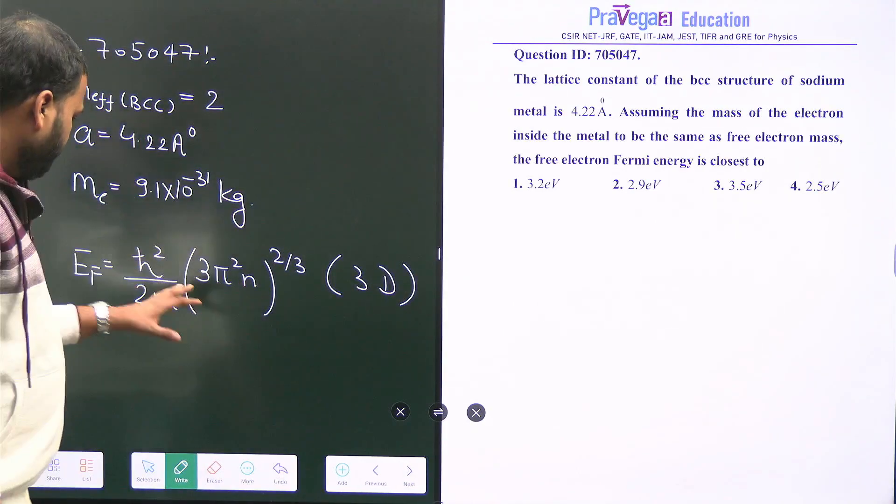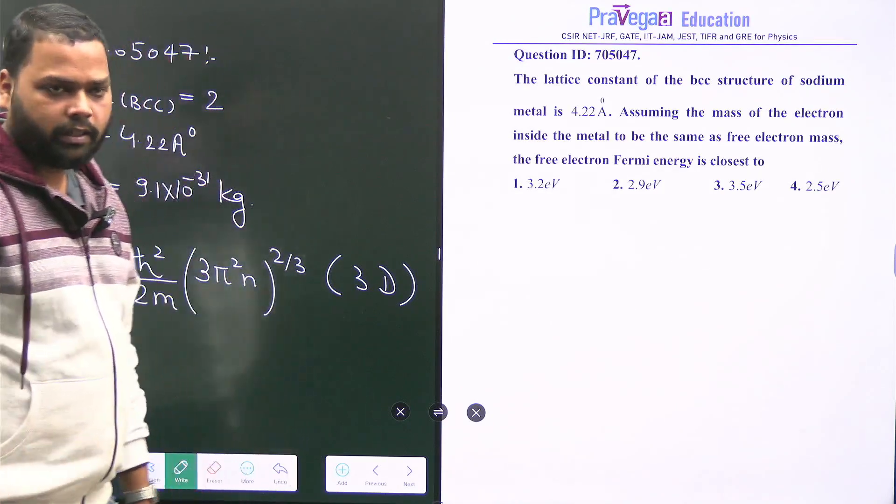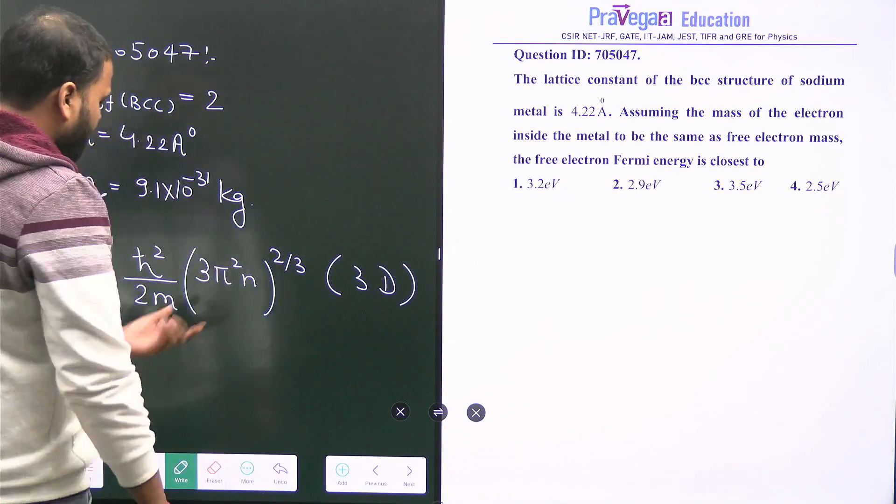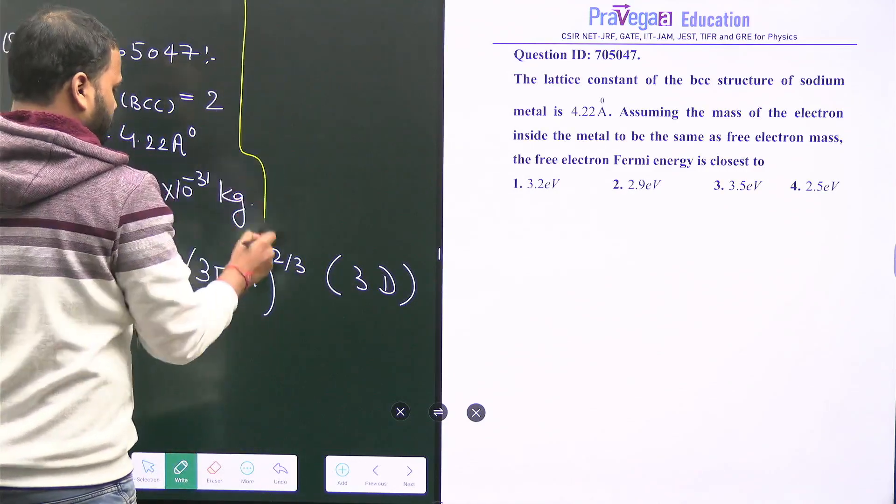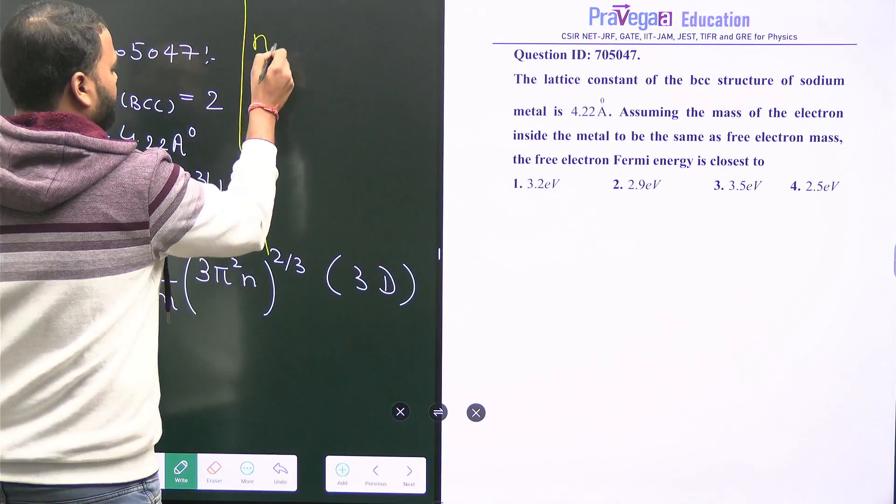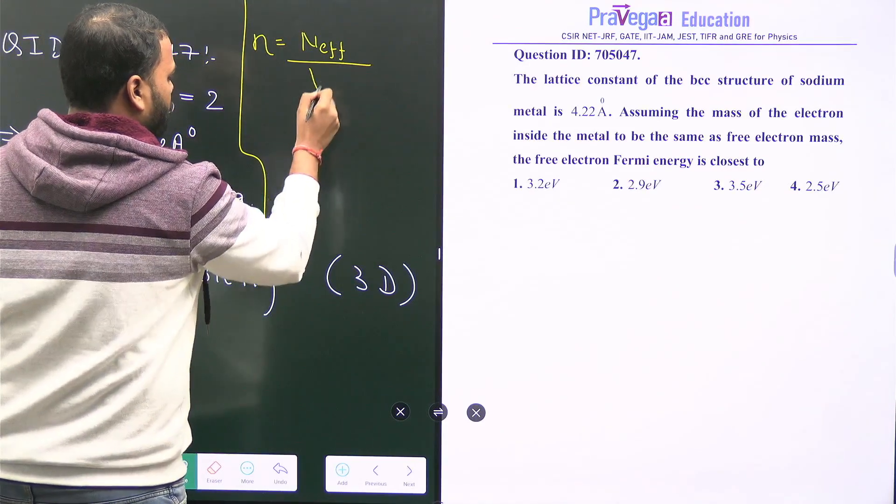The main thing is to find out small n, the electron number density. How will we find the electron number density from the information given?